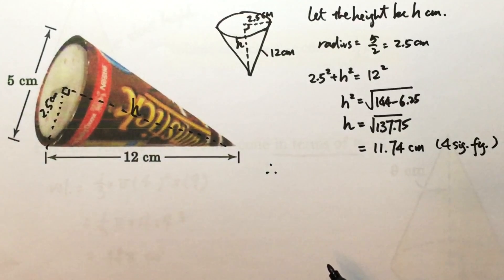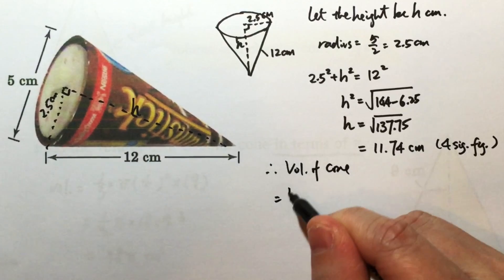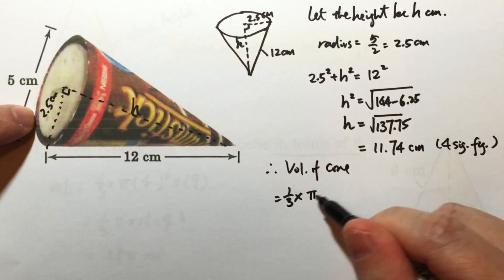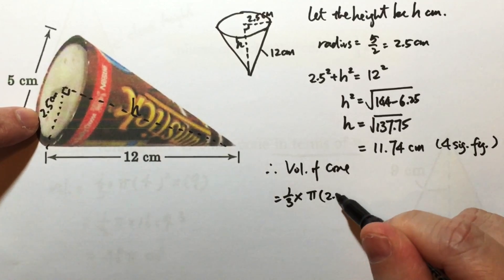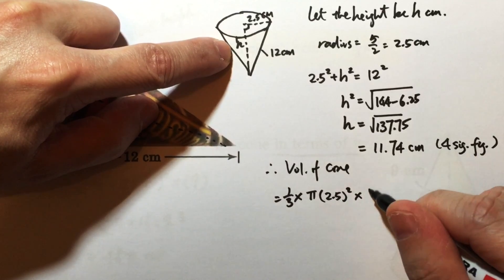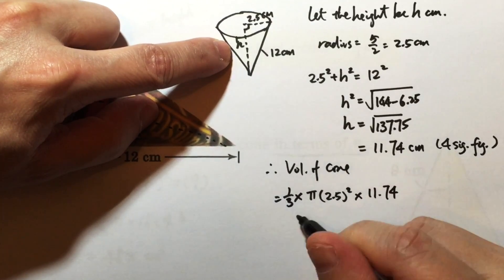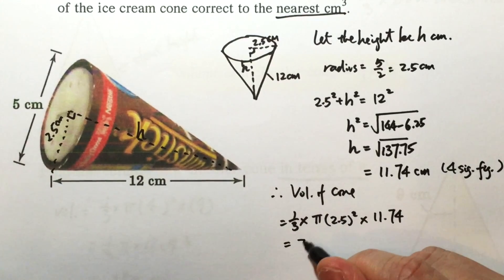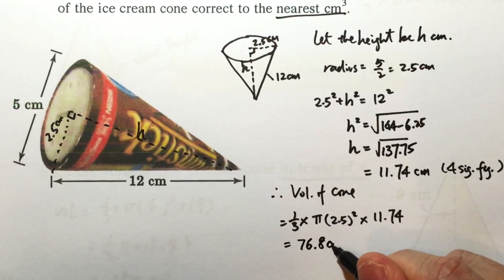Now we can find the volume of the cone. It's one-third times the base area. The base area is a circle, πr², so π × 2.5² × the height. The height is 11.74 cm. We can work out the answer to be 76.8 cm³.